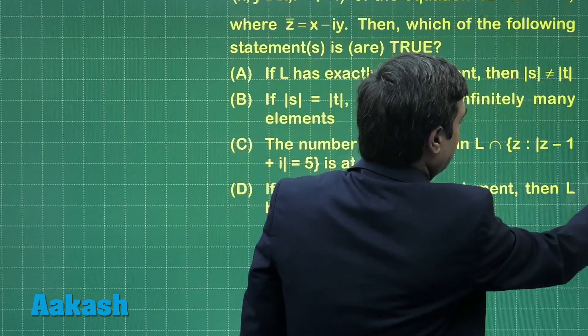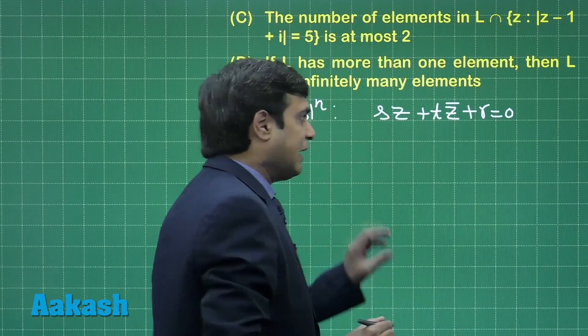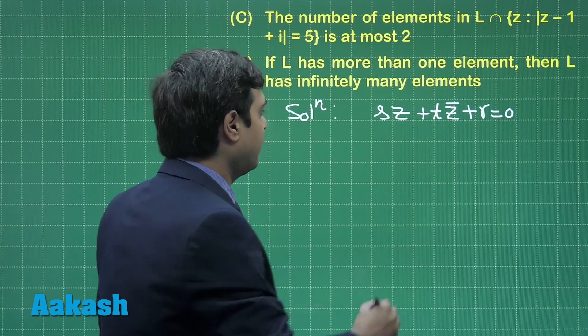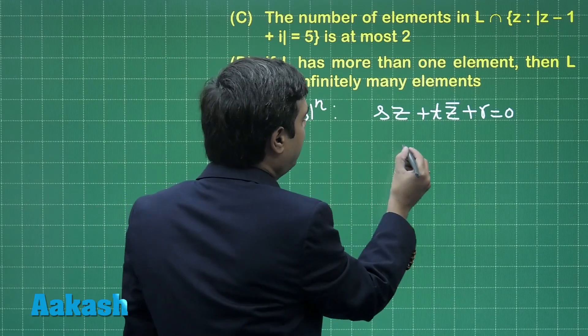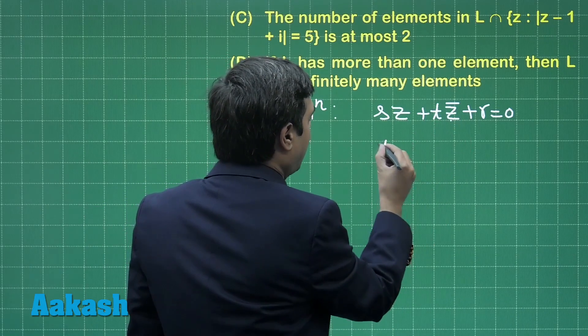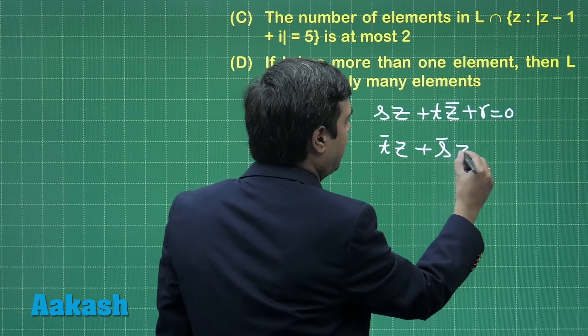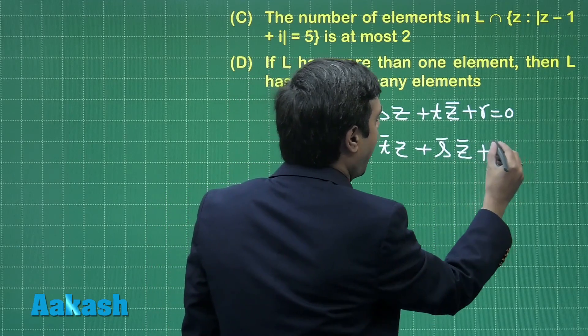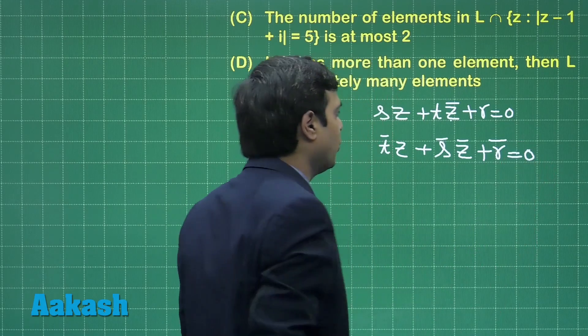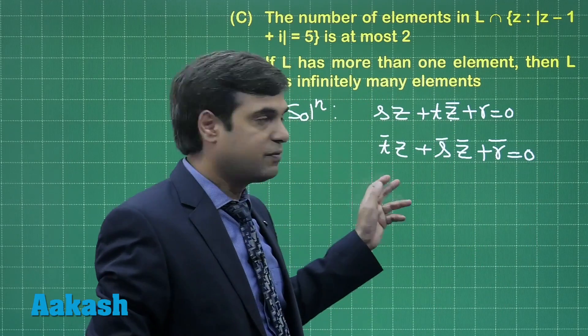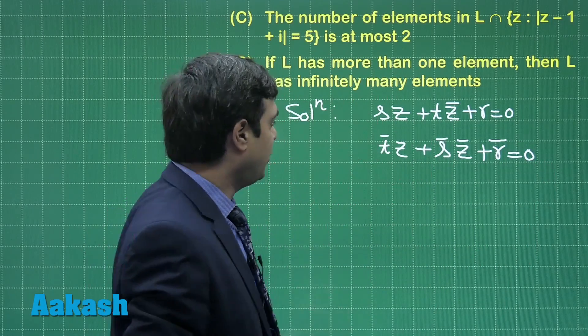To solve it, let us take conjugate of this equation. What we obtain on taking conjugate: T̄z plus S̄z̄ plus r̄ equals 0. I have written this term as the first one so that we have z below z only.